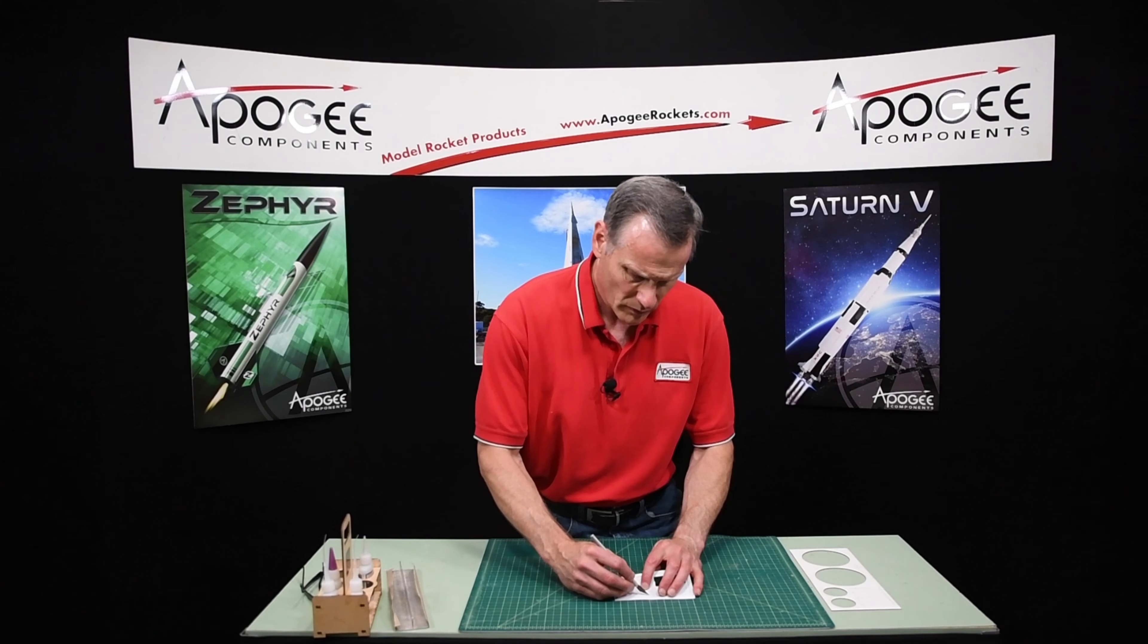We're going to glue two of these on. We just want to make sure those edges are nice and smooth. And I'm just going to use some thick super glue for this, and I'm just going to put some super glue on the back of the panel.